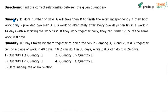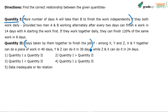Quantity one versus quantity two. Quantity one is the more number of days A will take than B to finish the work independently. From the condition onwards, the real question starts. Quantity two is the days taken by X, Y, and Z together to finish the job.